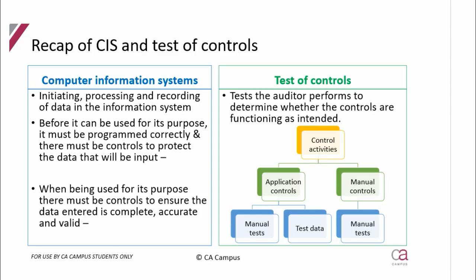If we do a quick recap of what we did last week: we considered whether the client had a computer information system and how that affects the auditors. An information system is how data — such as a sale or a purchase — that affects accounting records is initiated, processed, and recorded. We've done this from a manual perspective already; now we're asking what it means for the auditors and the audit if this information system is computerized.